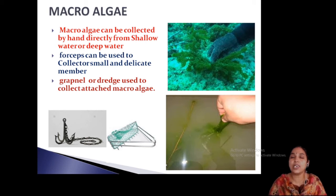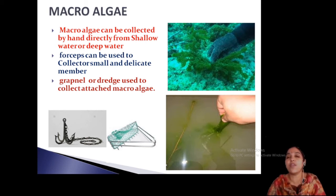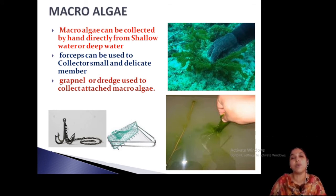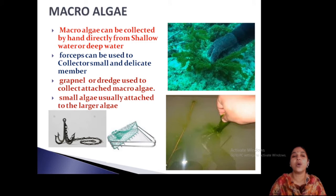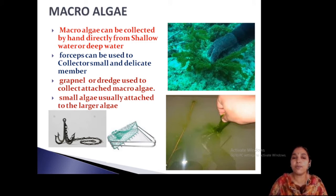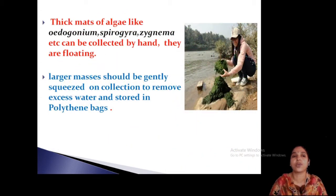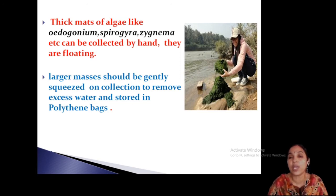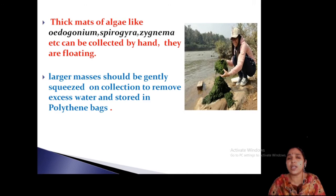Macroalgae can be collected easily with bare hands, but you should wear gloves, which is better because the water may be polluted. The grapnel and the dredge — remember both names. Thick mats of algae like Oedogonium, Spirogyra, and Zygnema form a hard green mat in the water and are easy to take by hand. They are also of the free-floating type.